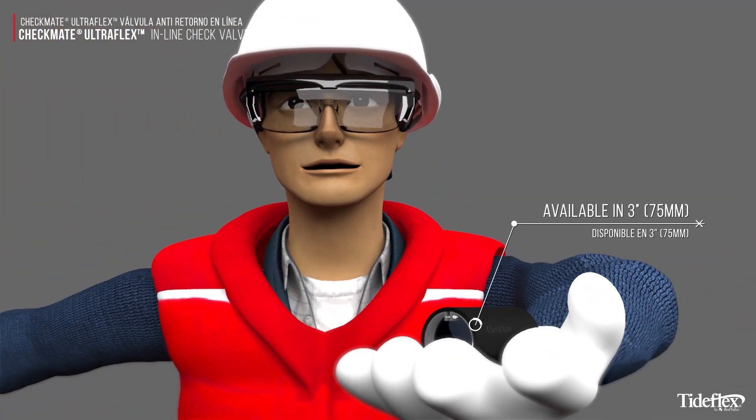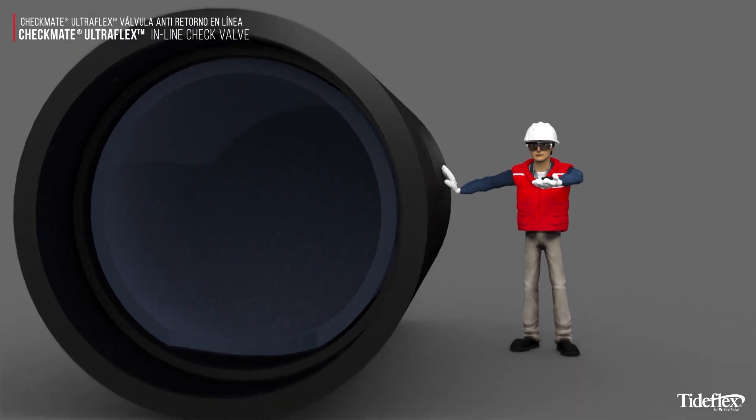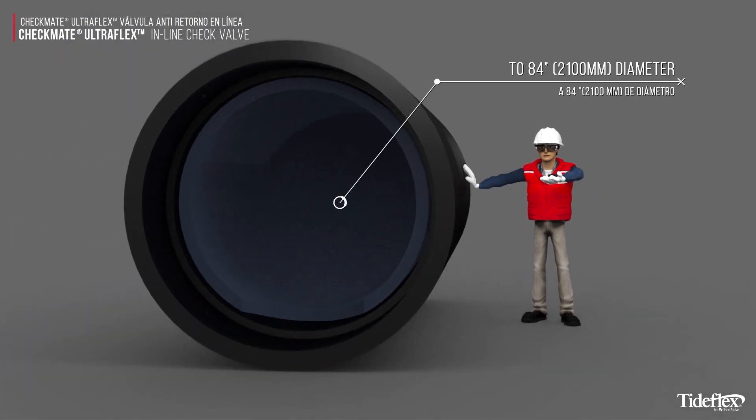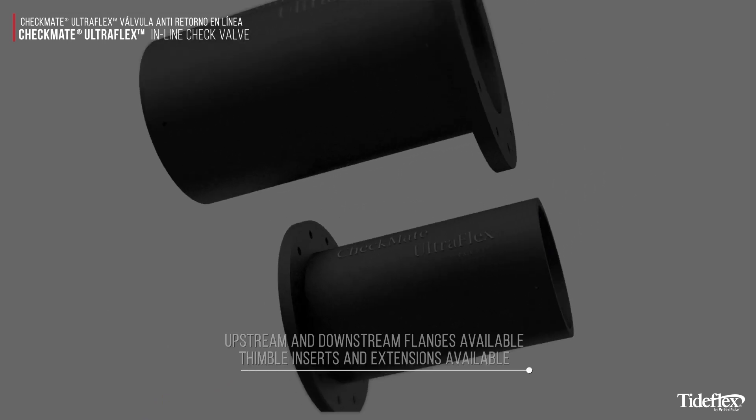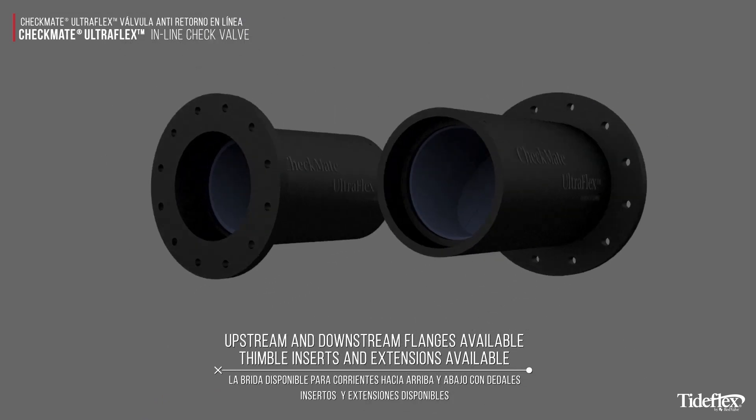Checkmate valves are available in a wide range of sizes from 3 inches to 84 inches in diameter. Both upstream and downstream flanges are available. Thimble inserts and extensions are also available.